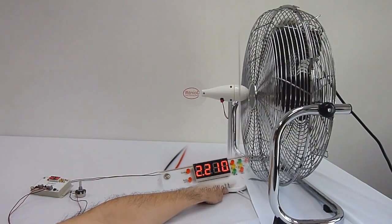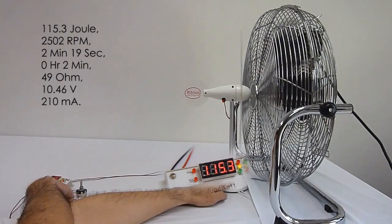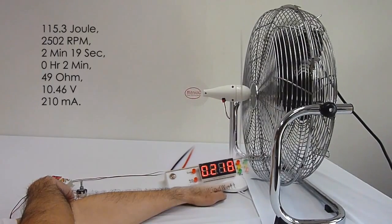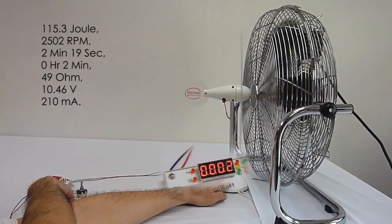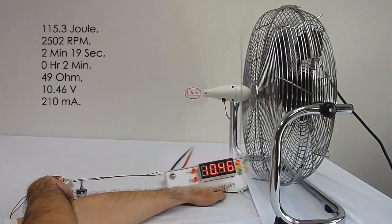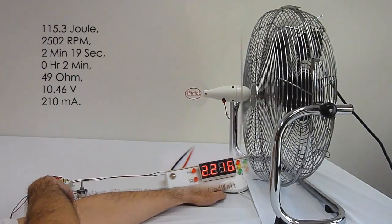Let us see what the other parameters are. They are 150.3 Joules, 2502 RPM, 2 minutes 19 seconds, 49 ohms, 10.46V, and 210mA.